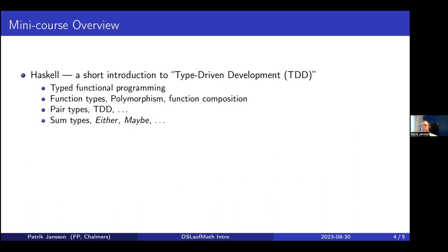The mini-course overview starts with an introduction to what might be called type-driven development. You may have heard of test-driven development — you write test cases first, then fill in code. Here I start by writing a type, which a compiler can automatically check. This takes us to the domain of typed functional programming, where Haskell is a prime example — a very nice language, around for 30 years but still very modern.